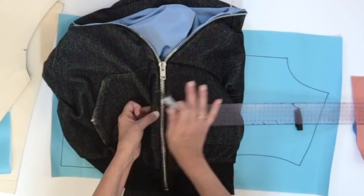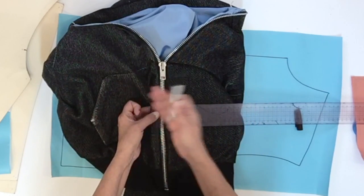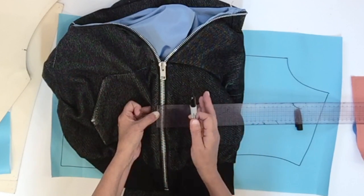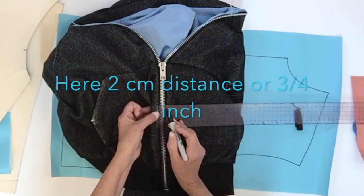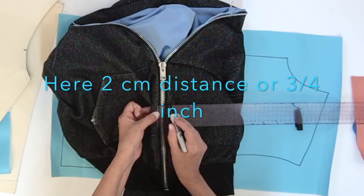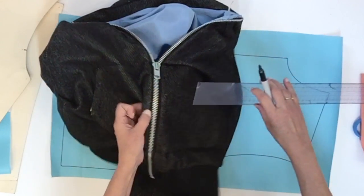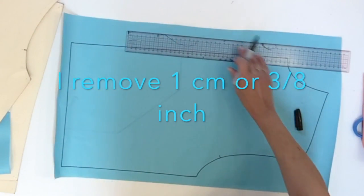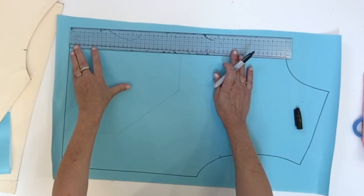it's going to push all your garment towards the back and the fit might be affected. So here I have two centimeters from fabric to fabric, so I would have to remove from my front one centimeter, half the distance.